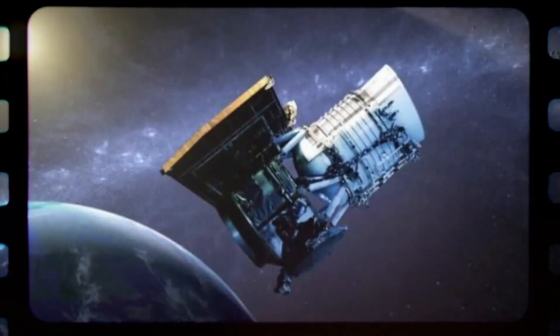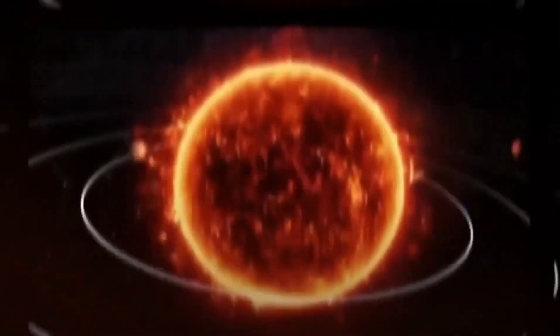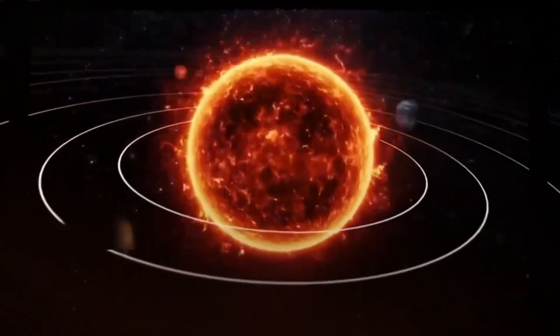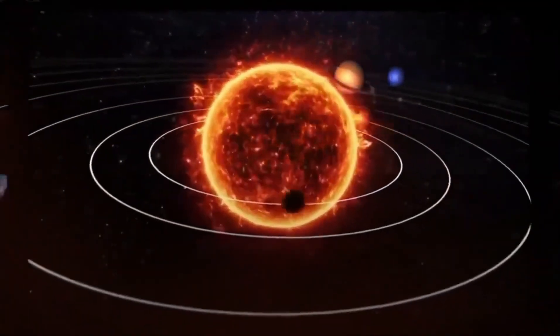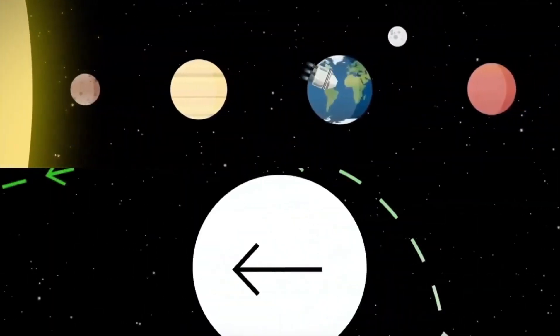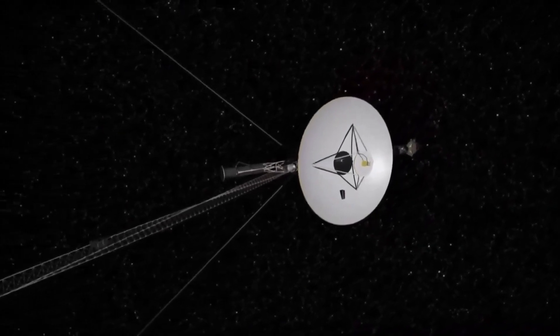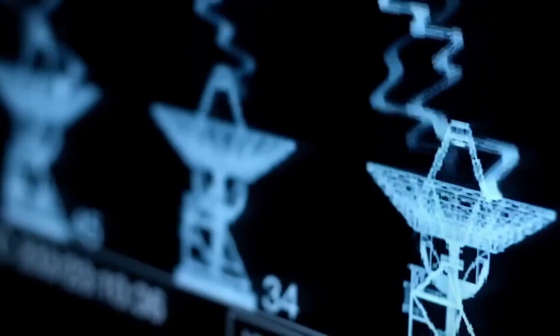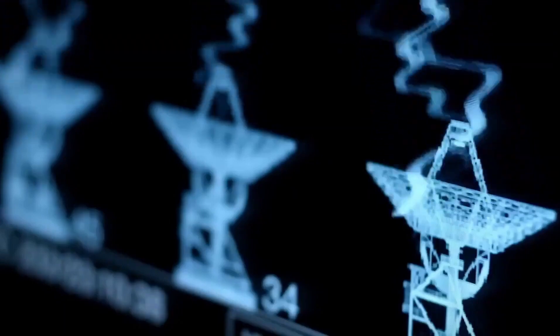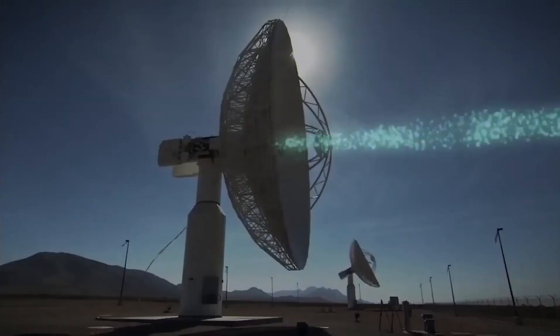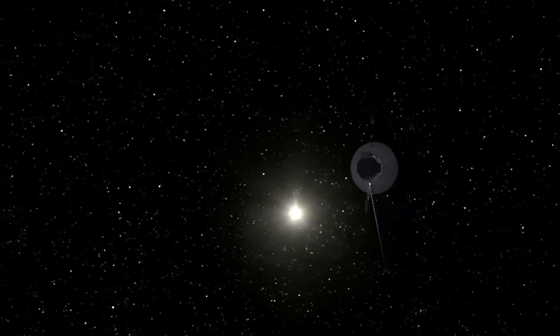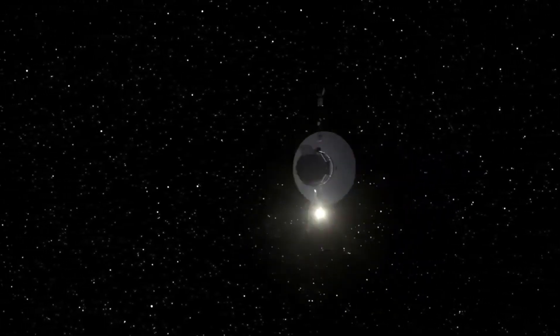In November 2018, Voyager 2, following in the footsteps of its predecessor Voyager 1, crossed the heliopause and entered interstellar space. This achievement marked a significant milestone in our understanding of the boundary between the Sun's sphere and the interstellar medium. Voyager 2's encounter with the heliopause provided a unique opportunity for scientists to compare and contrast observations made by both spacecraft, deepening our comprehension of this celestial frontier.